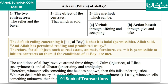The pillars of al-bay' are: one, the two contractors — the seller and the buyer; two, the object of the contract, which is what is being sold; three, the method, which can be (A) verbal, through offering and accepting, or (B) action-based, through give and take.